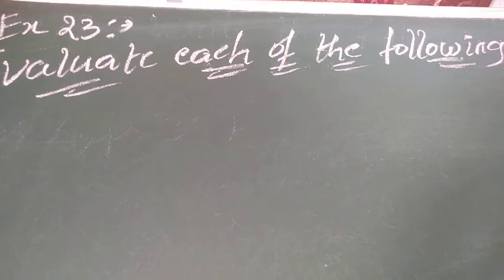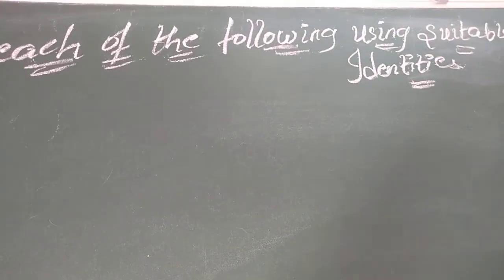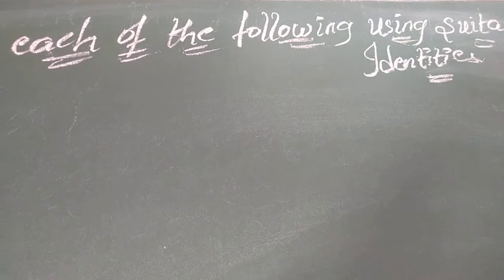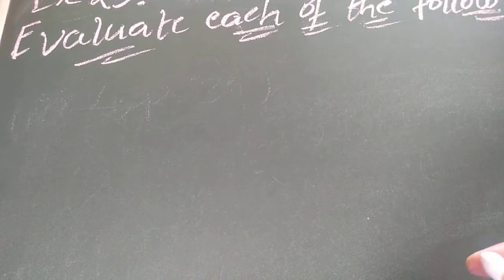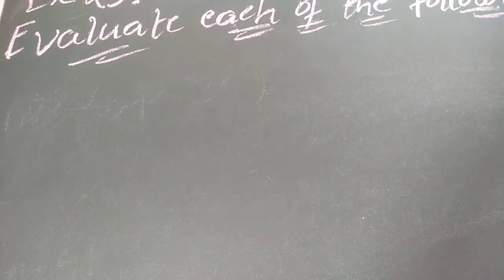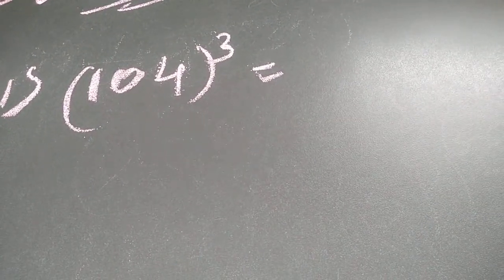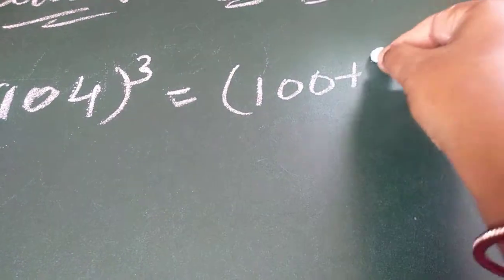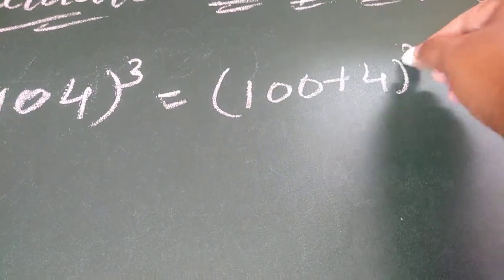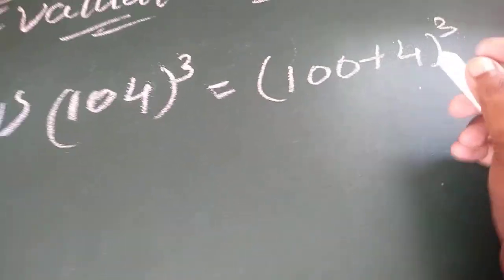Example 23: evaluate each of the following using suitable identities. Your first question is 104 whole cube. This does not directly match any identity as written, so I will make a small change and write it as 100 plus 4 whole cube. Now this matches the identity a plus b whole cube.